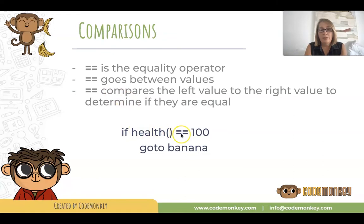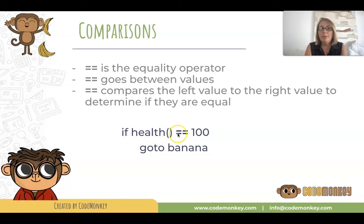Here's an example: if health equal equal 100. That's checking to see if the function health, which returns a number, returns the same value as 100. If those are equal, this condition will be true and you'll go to the banana.